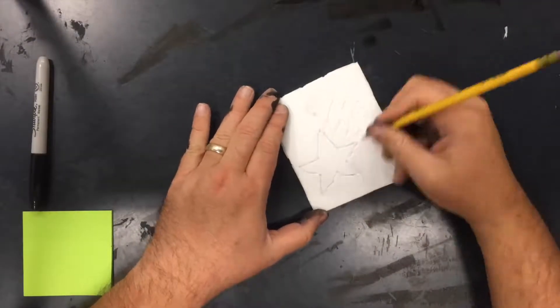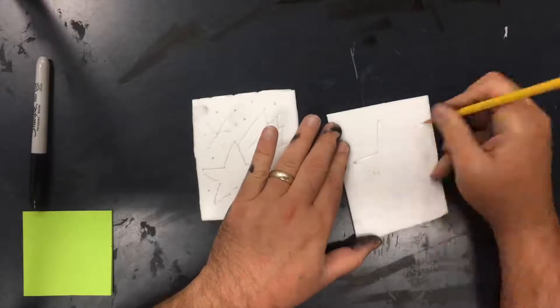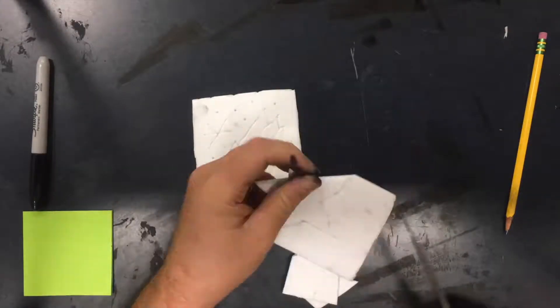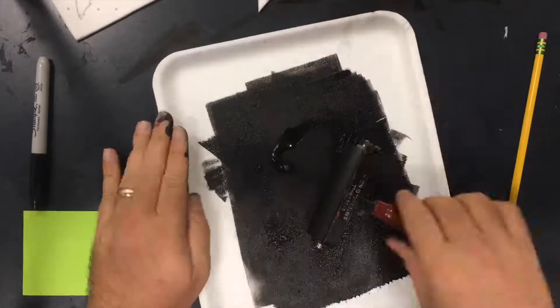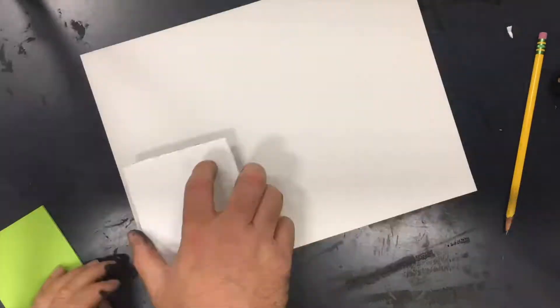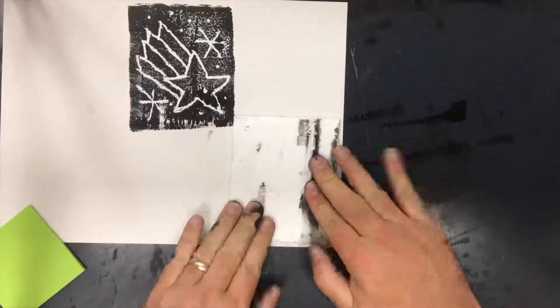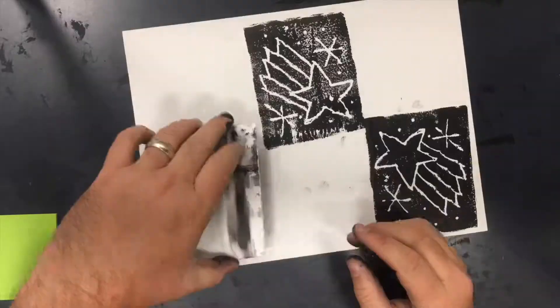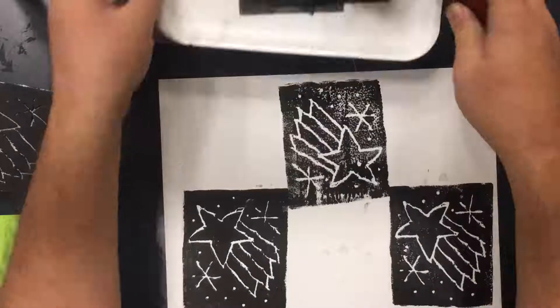Now that you know all about printmaking, there are lots of fun things that you can do with it. You can make limited edition art prints, of course. You can also make trading cards or t-shirts. You can make your own fabric, even. You can also make wrapping paper, like I'm doing here.